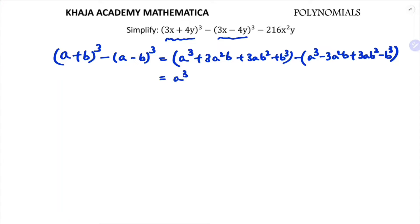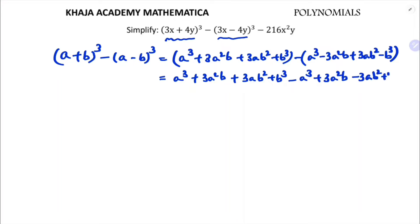Simplifying: a cube plus 3a squared b plus 3ab squared plus b cube, minus a cube plus 3a squared b minus 3ab squared plus b cube. Here a cube and a cube will get cancelled, and 3ab squared minus 3ab squared will also get cancelled.